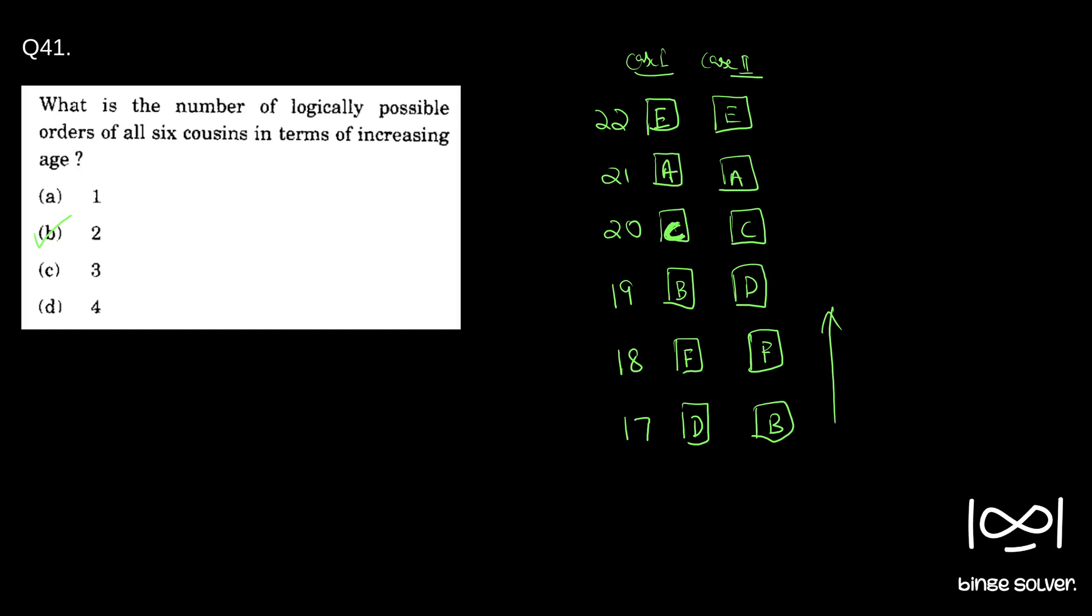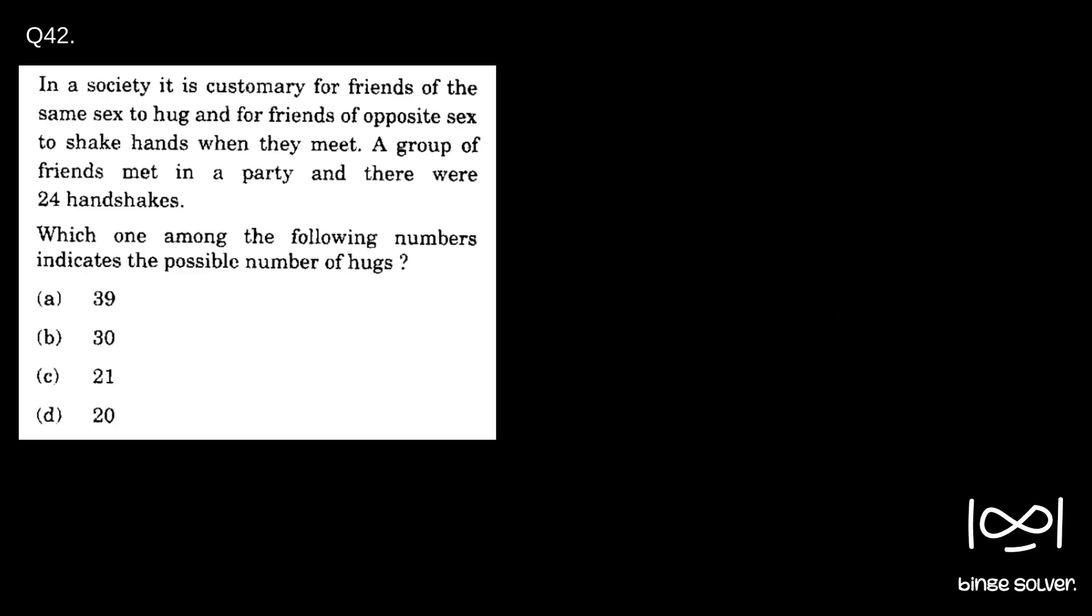Next question, question 42. In a society, it is customary for friends of the same sex to hug and for friends of opposite sex to shake hands when they meet. A group of friends met in a party and there were 24 handshakes. Which one among the following numbers indicates the possible number of hugs?